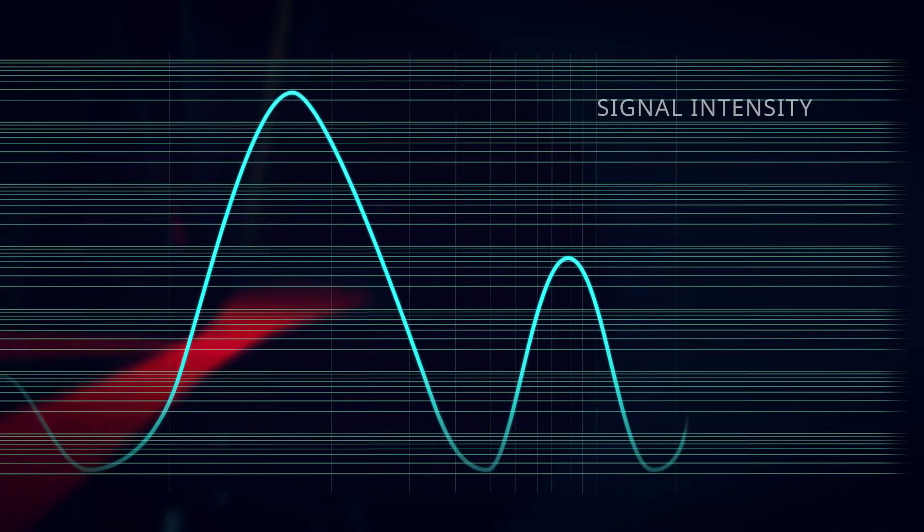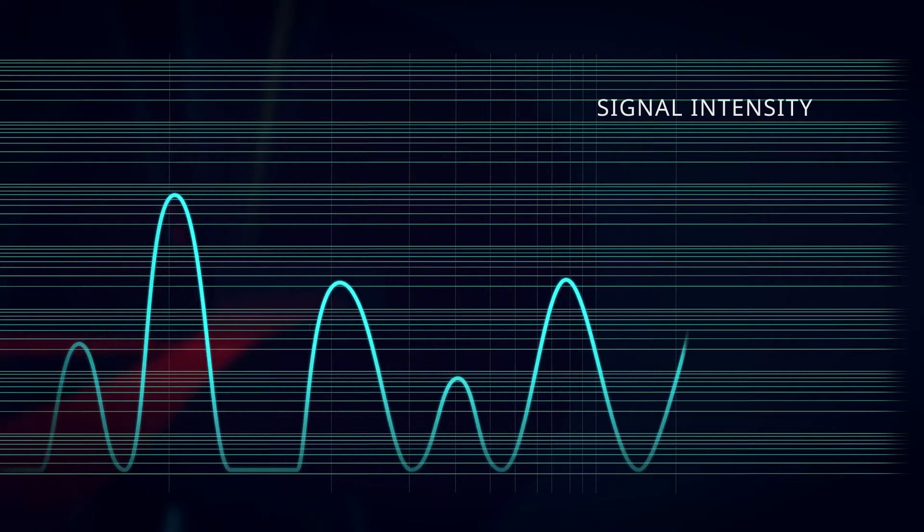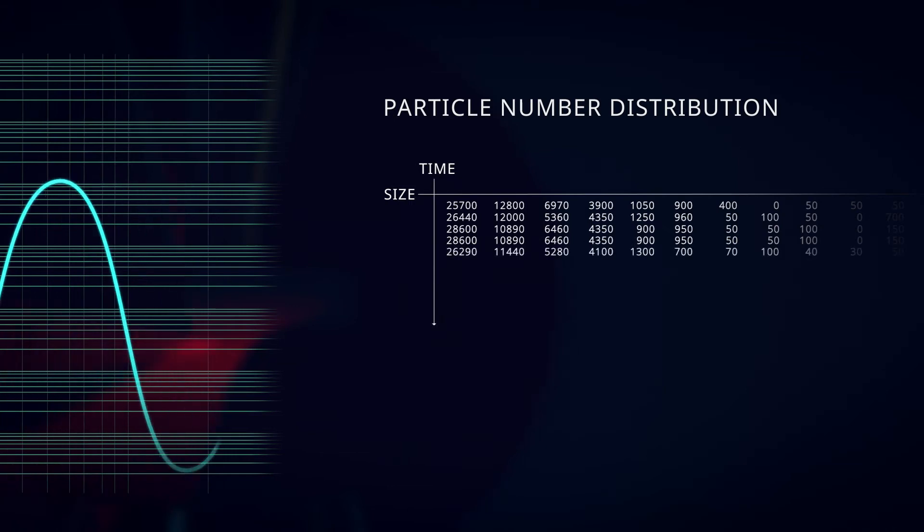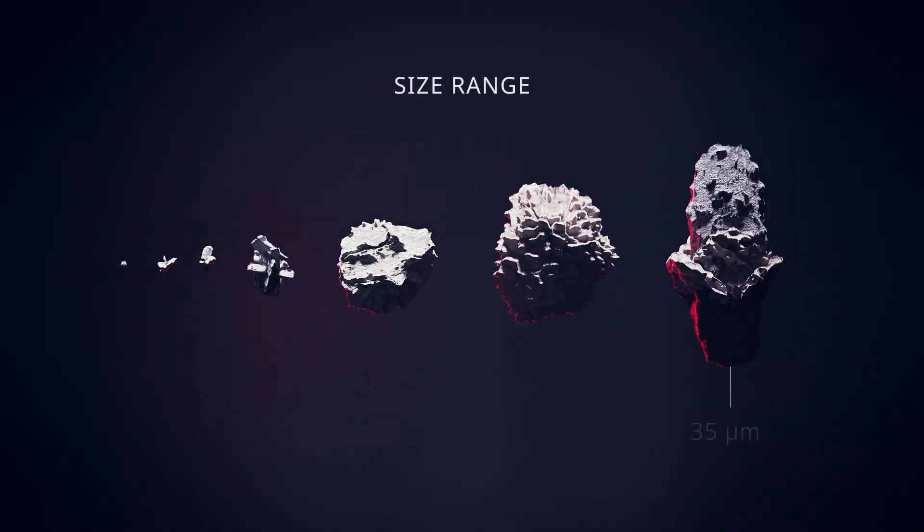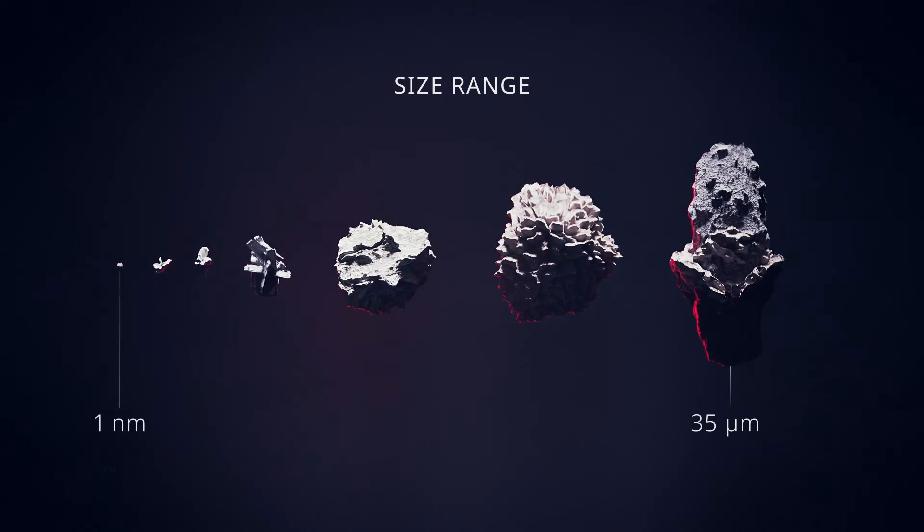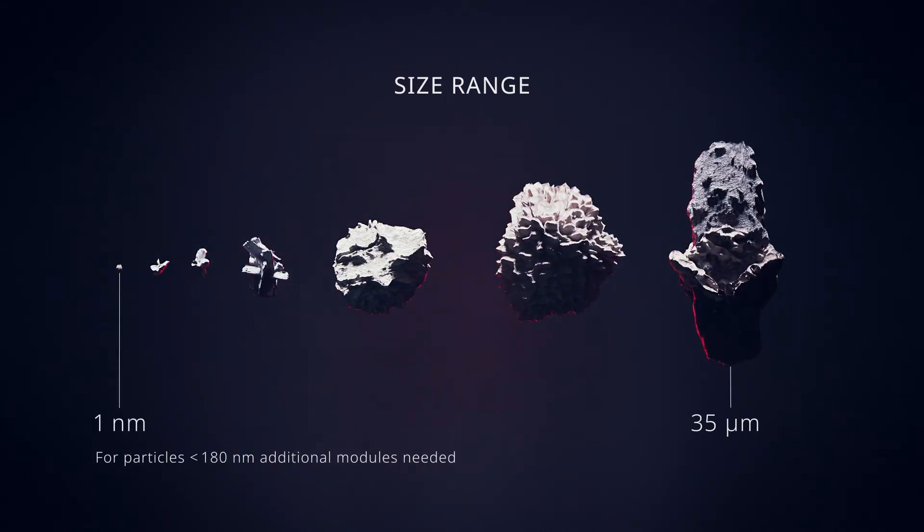The photodiode can process more than a million signals per second, each signal representing a particle and the light intensity indicating its size. Our systems are able to identify particles between 35 micrometers and one nanometer in size. This is comparable to the difference in size between the Earth and the Eiffel Tower.